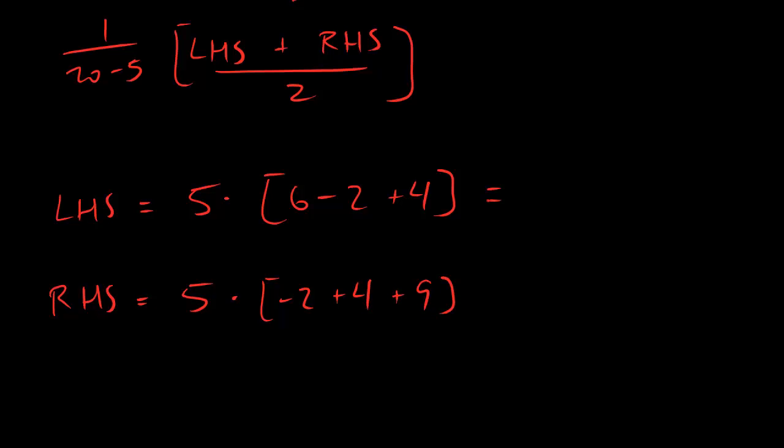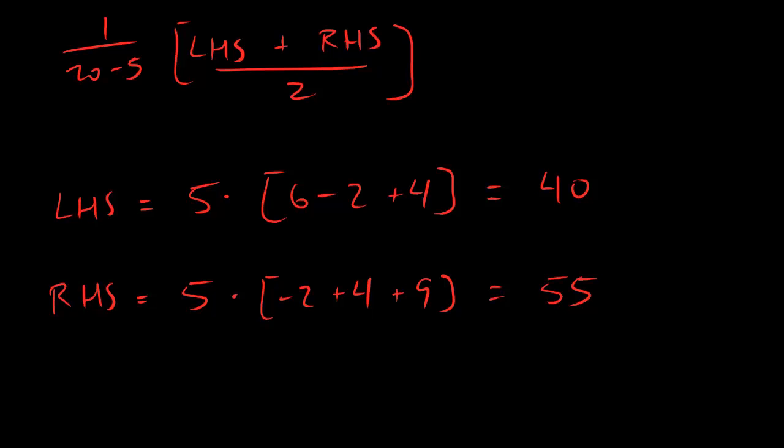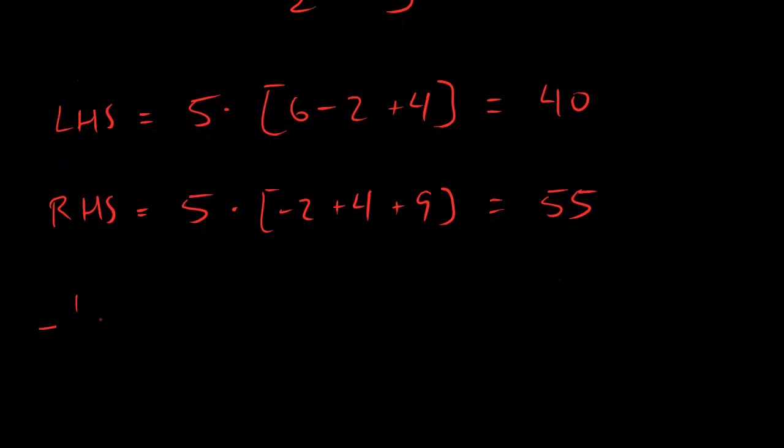Let's figure out what these numbers are. This is 8 times 5 is 40. And this is 2, 11, 55. So, dudes, the answer that we're looking for is 1 over 20 minus 5 is 15. And then, we're going to do the average of these puppies. So, it's going to be 40 plus 55 over 2.